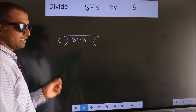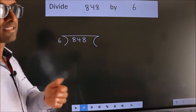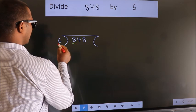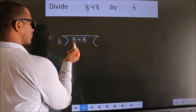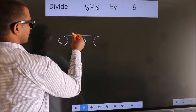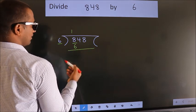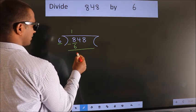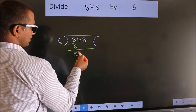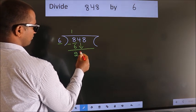This is your step 1. Next, here we have 8. A number close to 8 in the 6 times table is 6 — 6 ones are 6. Now we subtract, we get 2. After this, bring down the beside number, so 4 down.